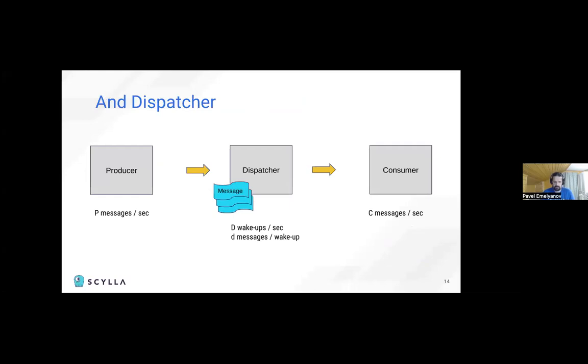To make this model more real and actually see the phantom jam, we need to add an interposer to this chain, which I call the dispatcher. It acts as a consumer and producer at the same time. It gets the data from the producer, can queue it internally, and then forwards the data to the real consumer. It does so at the maximum rate of D wakeups per second, and d small messages per wakeup.